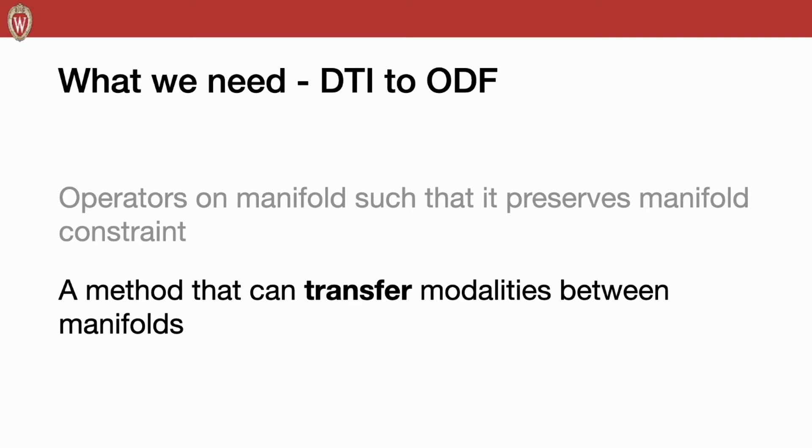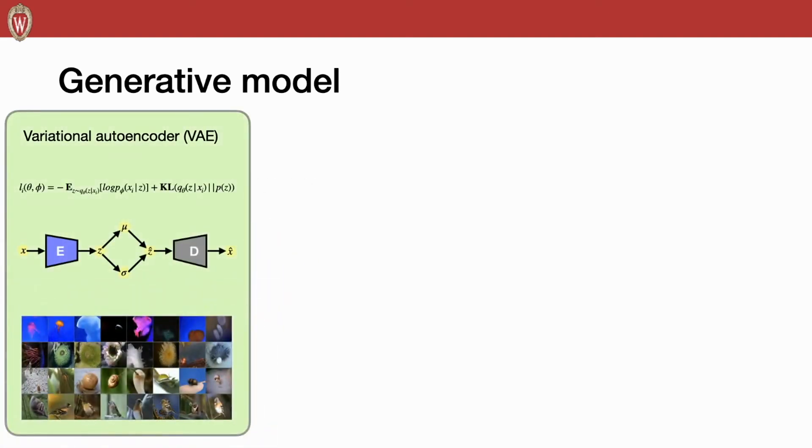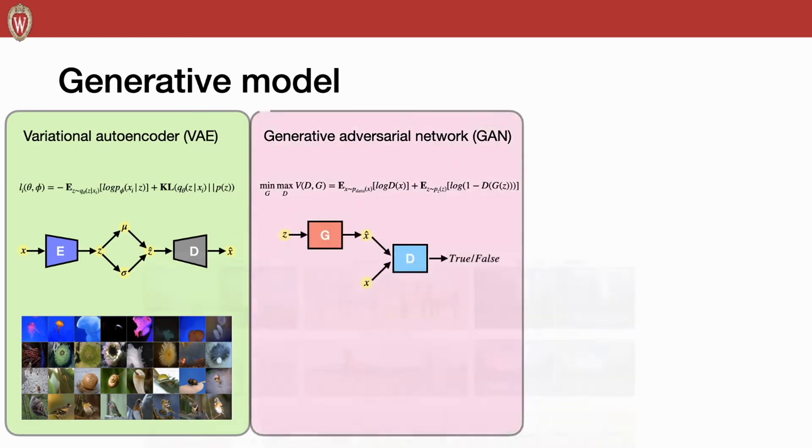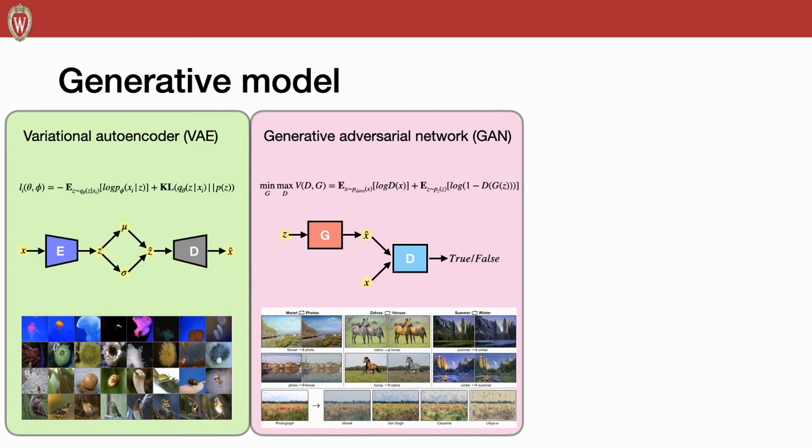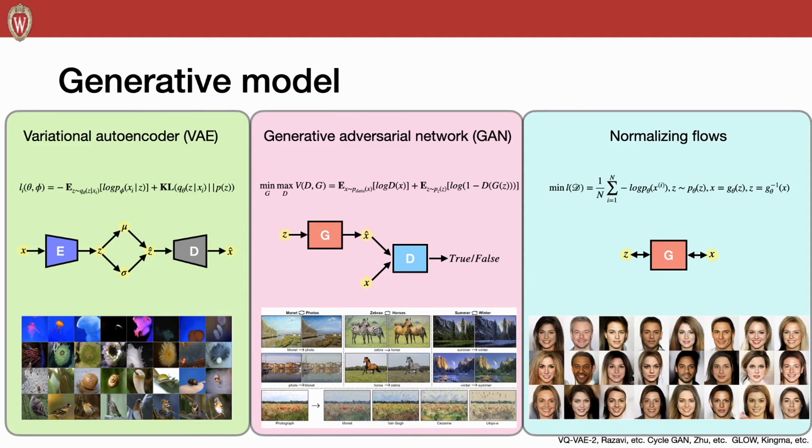Then, with those operators on manifold, the remaining question is how to transfer the modalities. There are many mechanisms proposed in Euclidean domain to generate high-resolution images. There are several types of generative models. VAE encodes the input X to the latent space Z with some prior distribution, for example, Gaussian. Then, sample from the distribution to decode or generate the X hat. The structure here is quite simple, but it tends to generate blurry images. GANs are the competition between two networks. Generator generates fake data from Gaussian noise. The discriminator decides whether the input is true or fake data. If we want to extend GAN to manifold space, these two networks, generator and discriminator, need to be fine-tuned carefully.